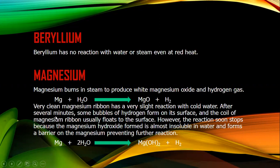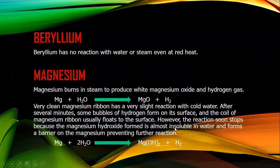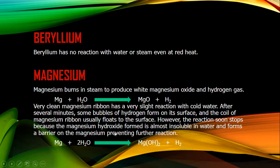This reaction takes place after several minutes, when you see some bubbles of hydrogen forming at the surface. Then the reaction stops, because the magnesium hydroxide forms an insoluble layer on the magnesium metal and acts as a barrier, preventing further reaction.